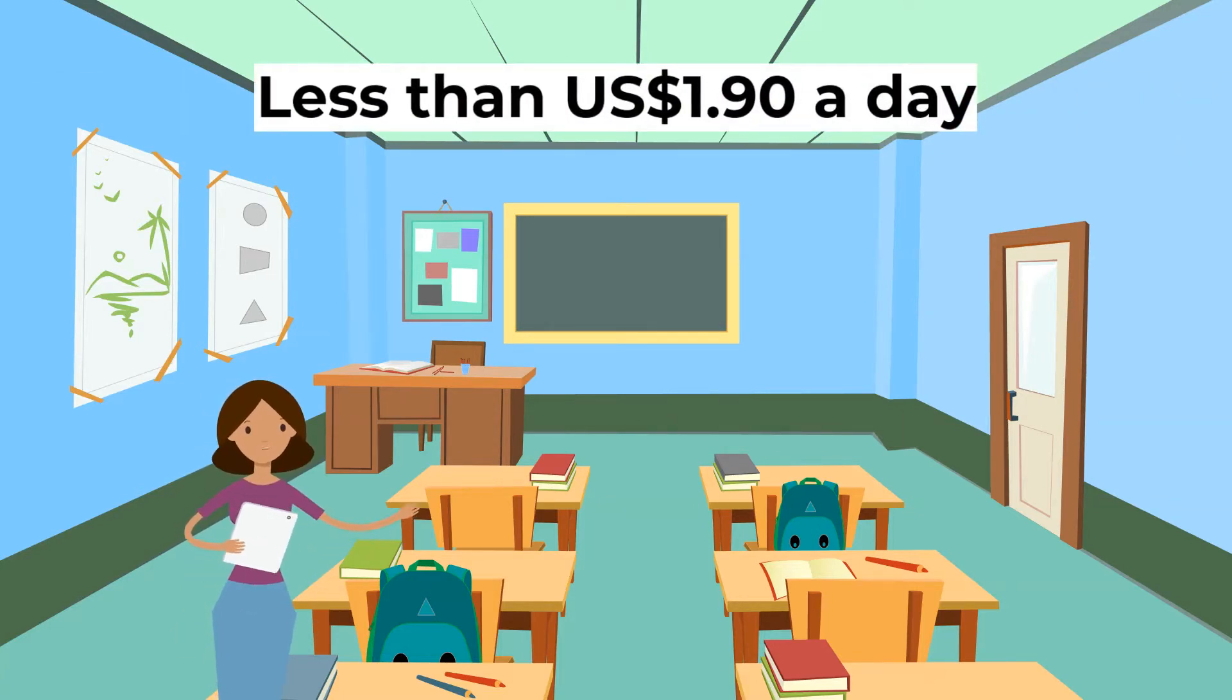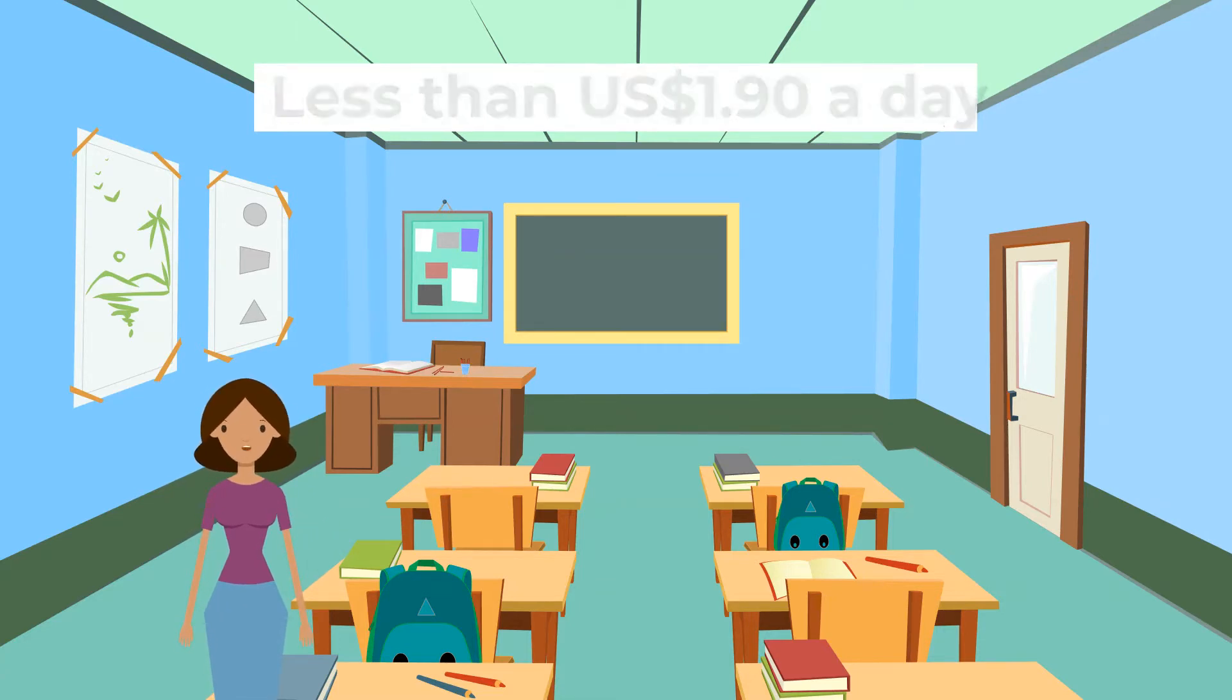The World Bank defines anyone living on less than one U.S. dollar and 90 cents a day as living in absolute poverty.